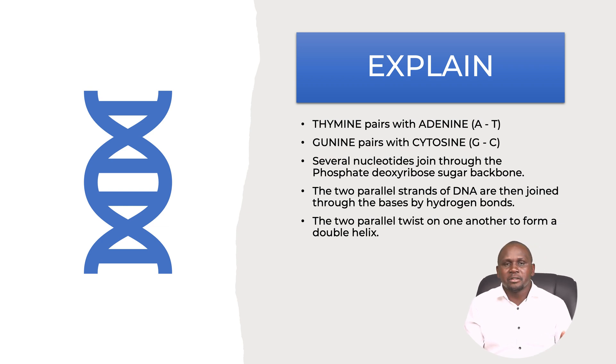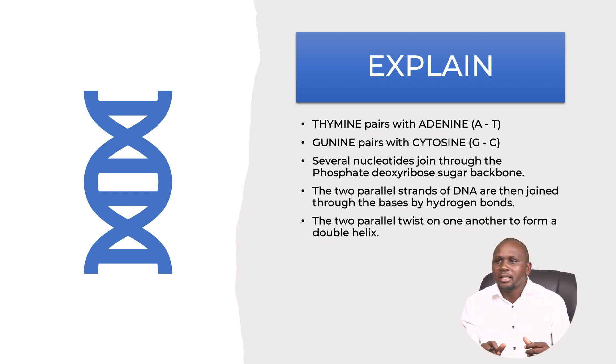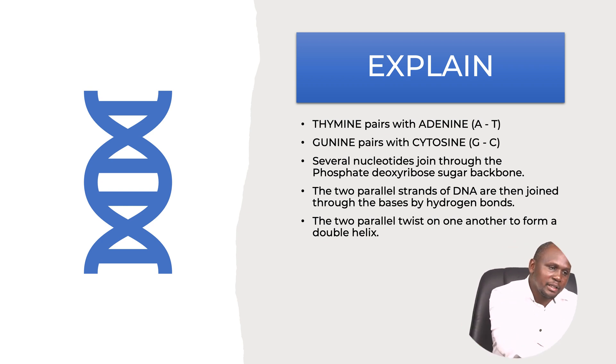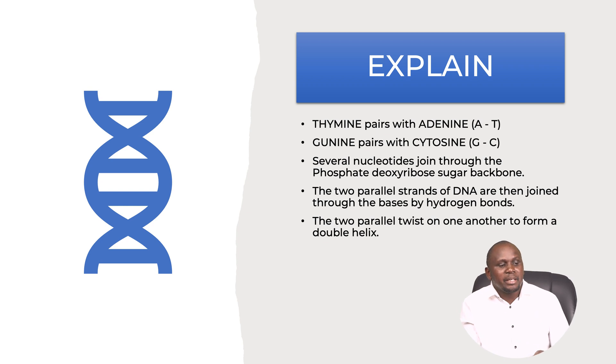In summary, we have looked at the structure of DNA. DNA has a double helix structure. The basic building block is the nucleotide, which has components: adenine, thymine, cytosine, and guanine. They pair in a specific manner — adenine pairs with thymine, and cytosine pairs with guanine. You can remember them as A-T and G-C.